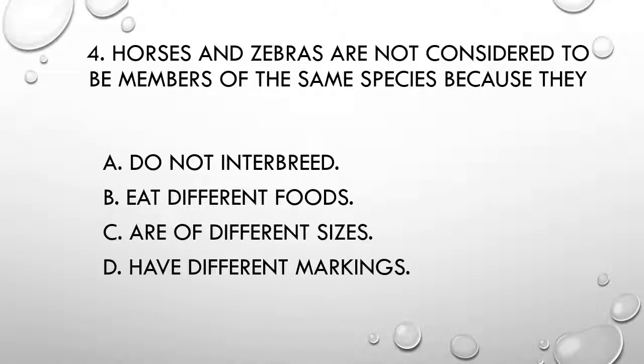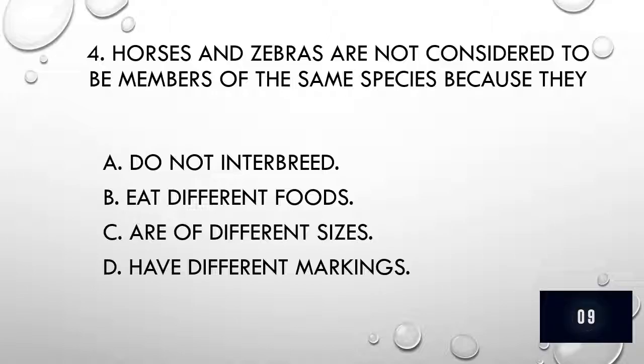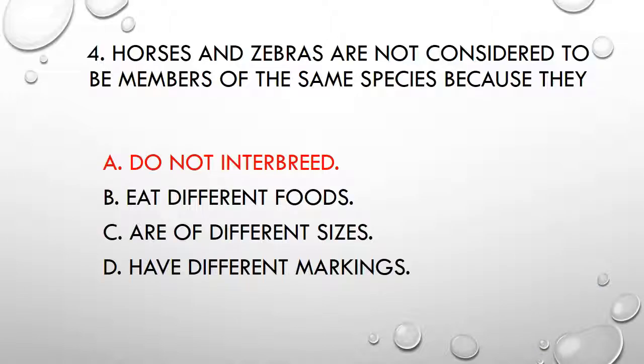Question 4. Horses and zebras are not considered to be members of the same species because they: A) do not interbreed, B) eat different foods, C) are of different sizes, D) have different markings. The correct answer is A, do not interbreed.